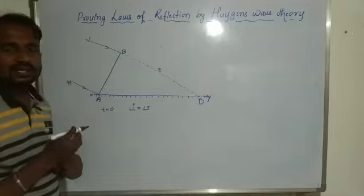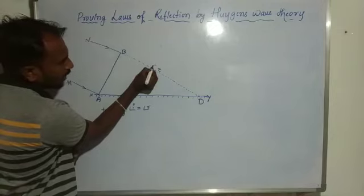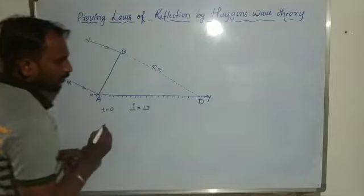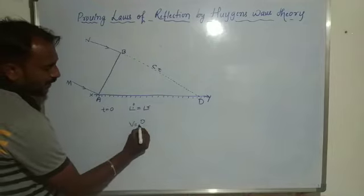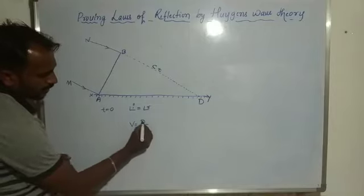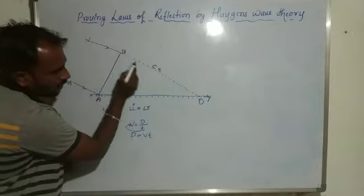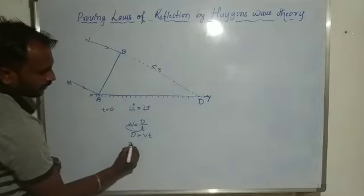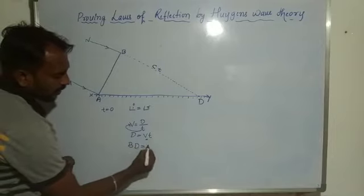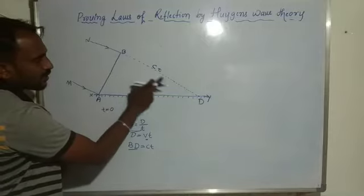The speed of light is represented by C. So the distance BD is represented by Ct. Because velocity V equals displacement divided by time, so displacement equals velocity into time. Therefore, the distance of light ray BD equals velocity of light C multiplied by time interval T — so BD equals Ct.